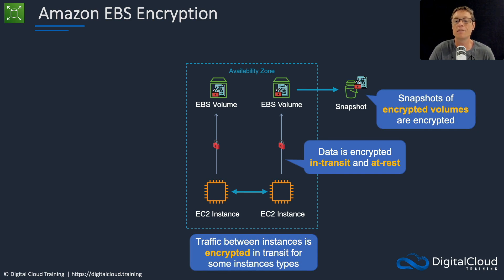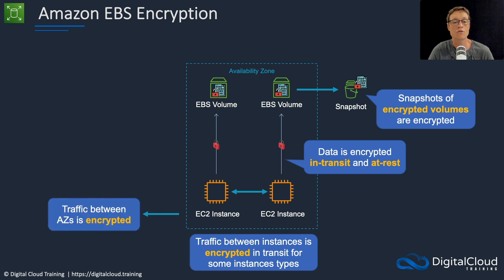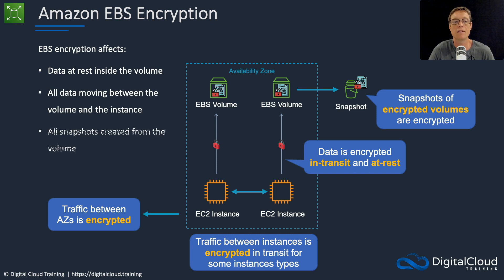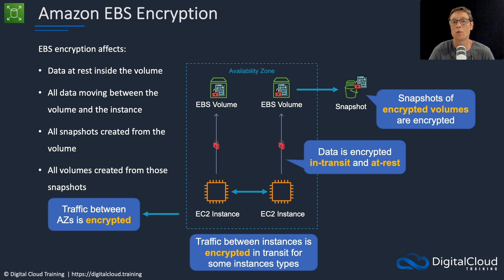Traffic between instances is also encrypted in transit for some instance types, and if traffic moves between AZs between instances, that is also encrypted. EBS encryption affects data at rest inside the volume, all data moving between the volume and the instance, all snapshots created from the volume, and all volumes created from those snapshots.